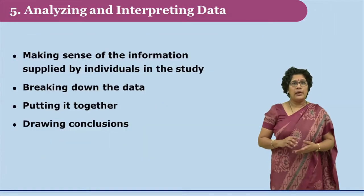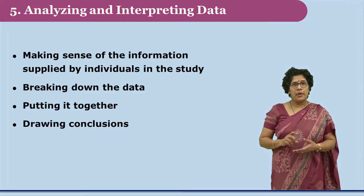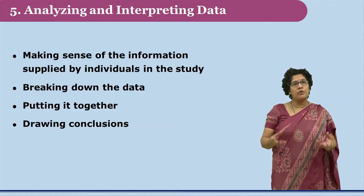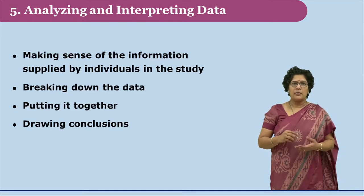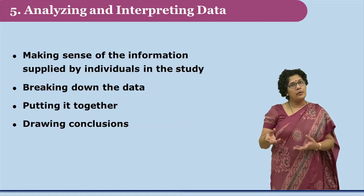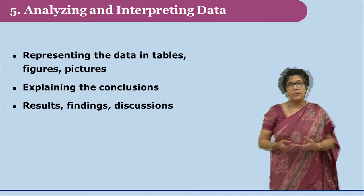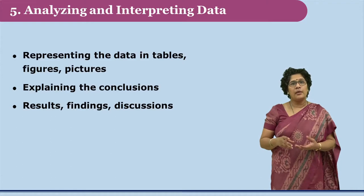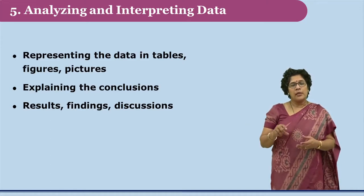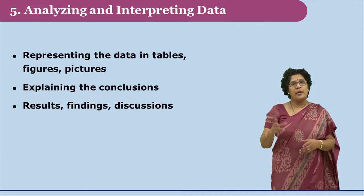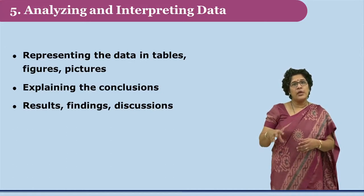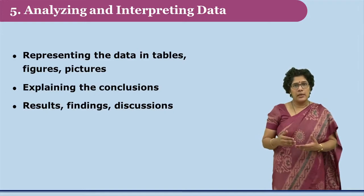The fifth step in conducting research is the analysis and interpretation of data, which is a very crucial stage. At this stage the researcher makes meaning out of the collected data by breaking it down, putting it together, and drawing conclusions. Data is represented in the form of tables, graphs, or other figures. The researcher not only draws conclusions but also explains the rationale behind each observation. Results are then discussed in terms of findings as well as recommendations for further researches.